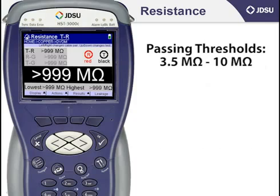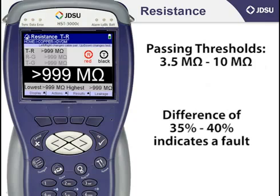Passing thresholds for resistance vary between 3.5 megaohms on the low end to 10 megaohms on the higher end when measuring tip to ring, tip to ground, and ring to ground, depending upon how your company sets the passing threshold. Generally, a leakage measurement less than 10 megaohms indicates the presence of a fault that should be located and cleared.